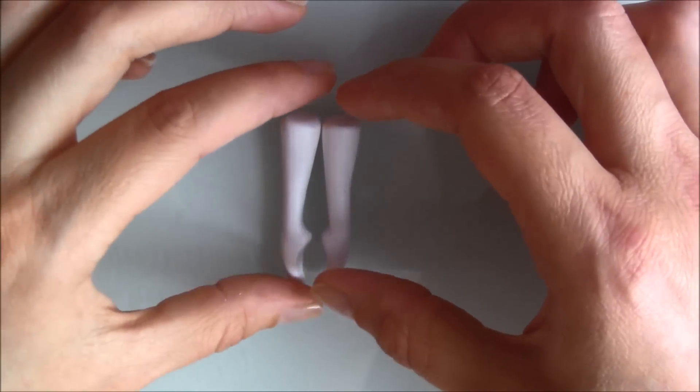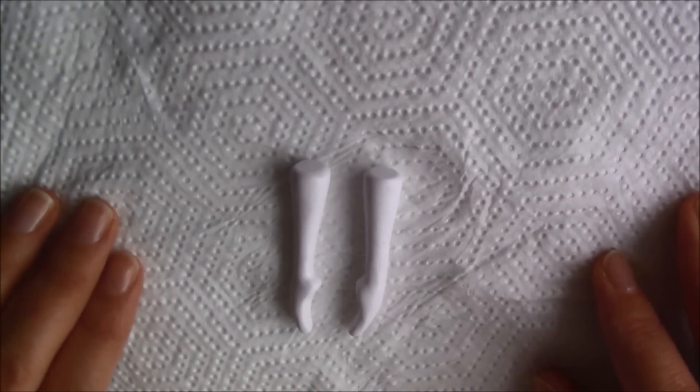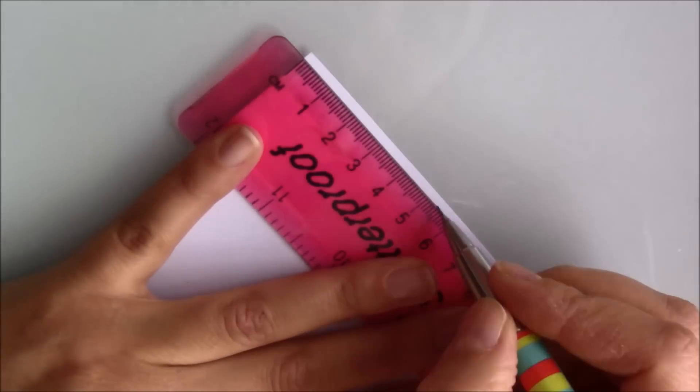Bake them for 25 minutes at 110 degrees Celsius. To do that I put them on tissue paper so they wouldn't have flat marks on them.